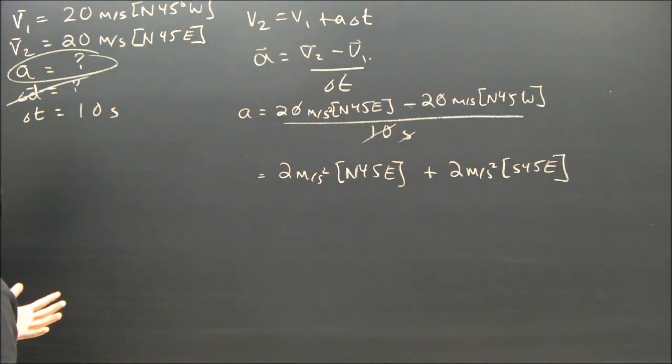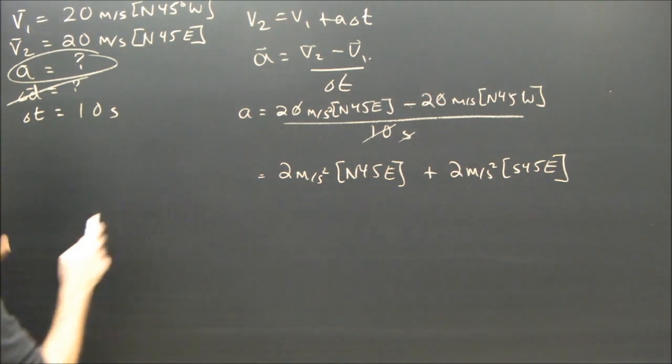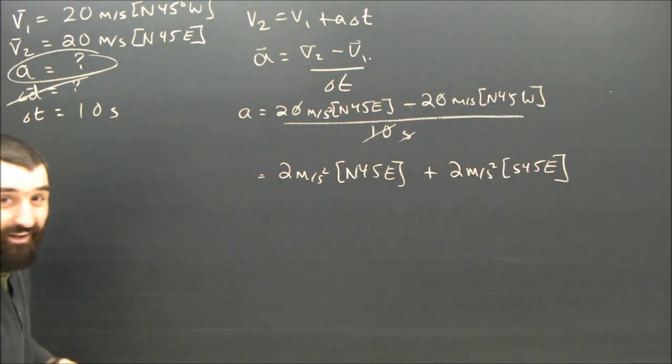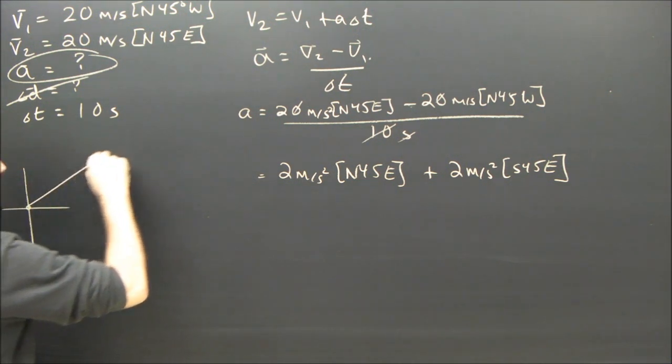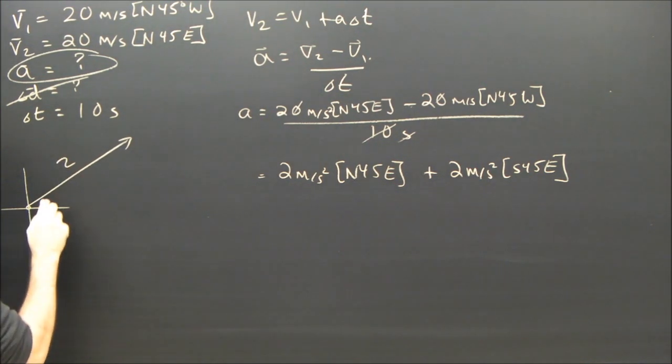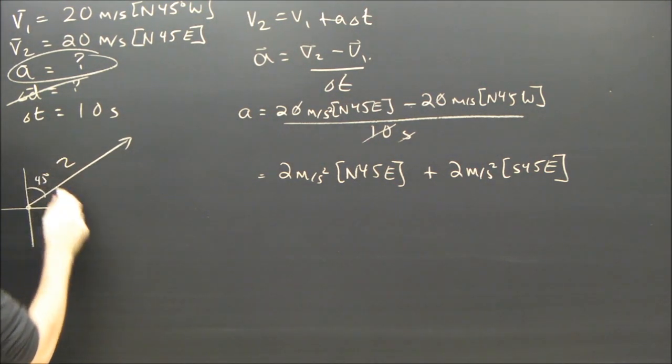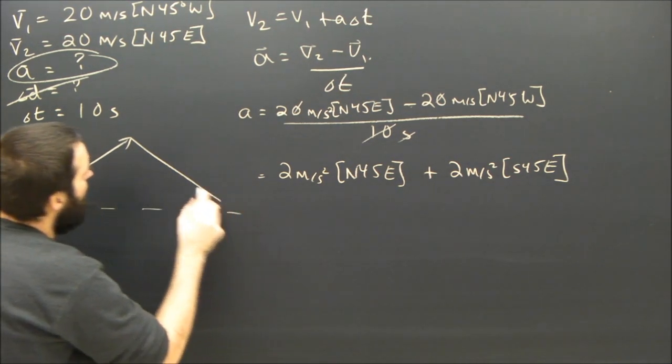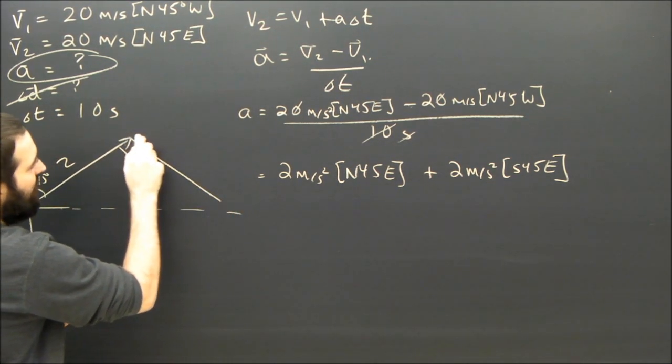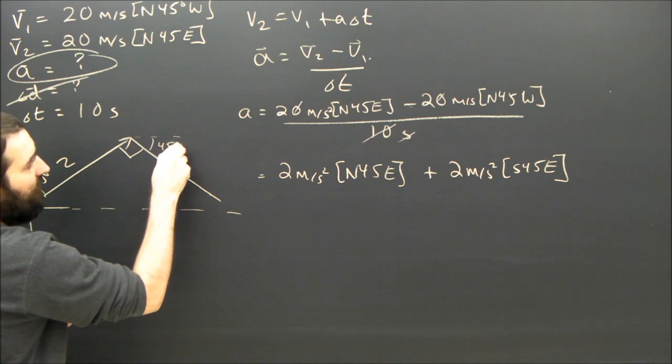Now it's a simple matter of adding these two things. Should I make a little diagram? Sure. It doesn't have to be to scale because northeast and southeast. It's going to be a right angle triangle, isn't it? Both 2 and 2. So let's say I started here and I went 2. And this is 45 degrees. Now I'm going to go 2. And this is 90 degrees because this is 45 degrees southeast.